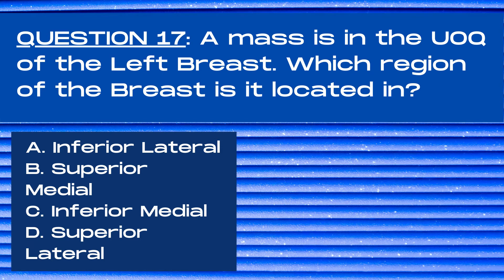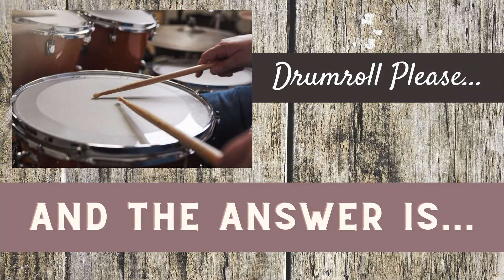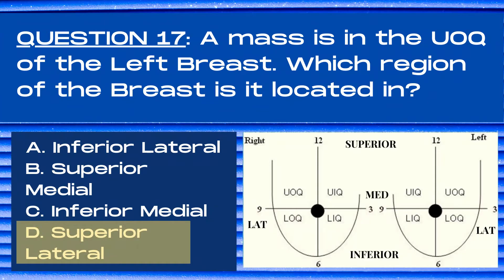Question 17. A mass is in the upper outer quadrant of the left breast. Which region of the breast is it located in? A inferior lateral, B superior medial, C inferior medial, or D superior lateral? The answer is D, superior lateral. The upper outer quadrant of the left breast contains clock positions ranging from 12 o'clock to 3 o'clock, and is triangulated to the upper outer quadrant by combining superior and lateral locations in the left breast.